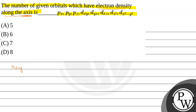First of all, let's see the key concept of this question. The given question is based on the concept of the shape of the orbitals, and here we have talked about p orbitals and d orbitals.